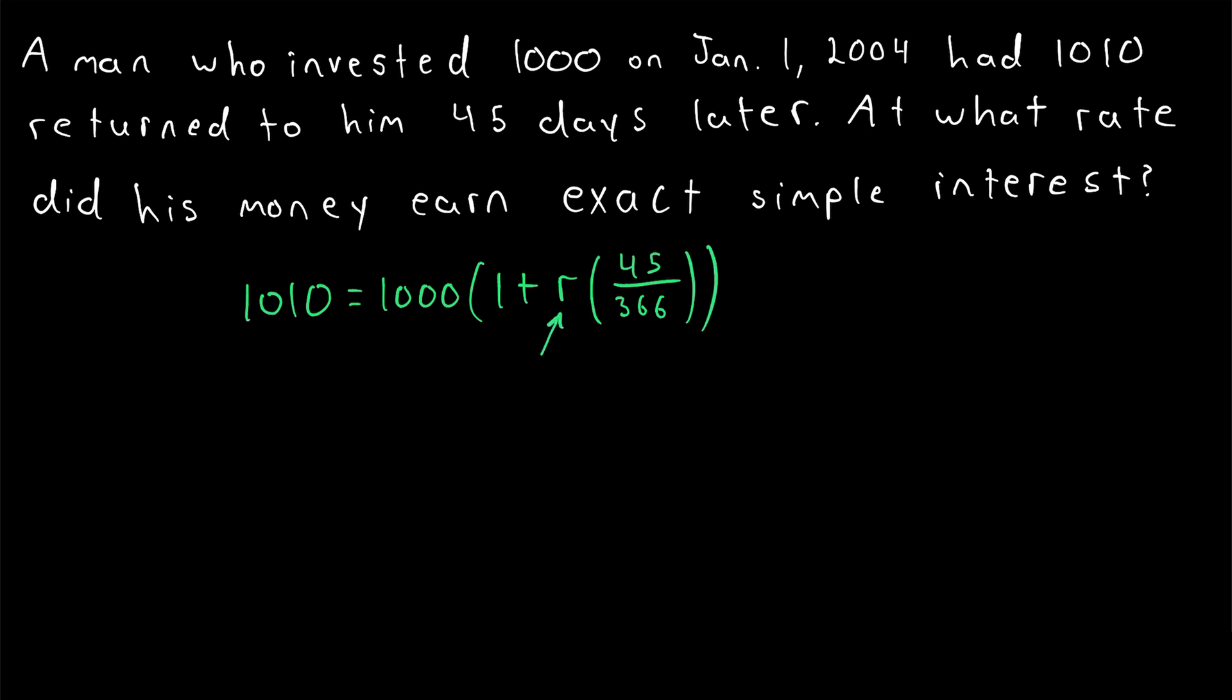Then, we just do some algebra to solve for R. Divide both sides of the equation by 1,000, so we have 1.01 is equal to 1 plus the interest rate, multiplied by 45, divided by 366.